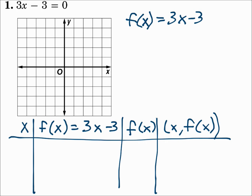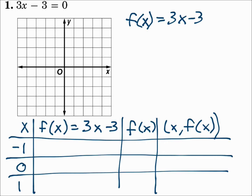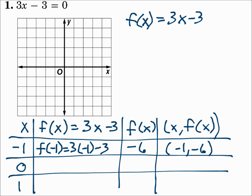It's a good idea to use negative 1, 0, and 1 for your x values. You can use any points you want, but those three give you a good set to connect. Substitute in negative 1: f of negative 1 is 3 times negative 1 minus 3, which is negative 6. So we have the point negative 1, negative 6. When x is 0, find f of 0, which is 3 times 0 minus 3. That gives negative 3, so our next point is 0, negative 3.